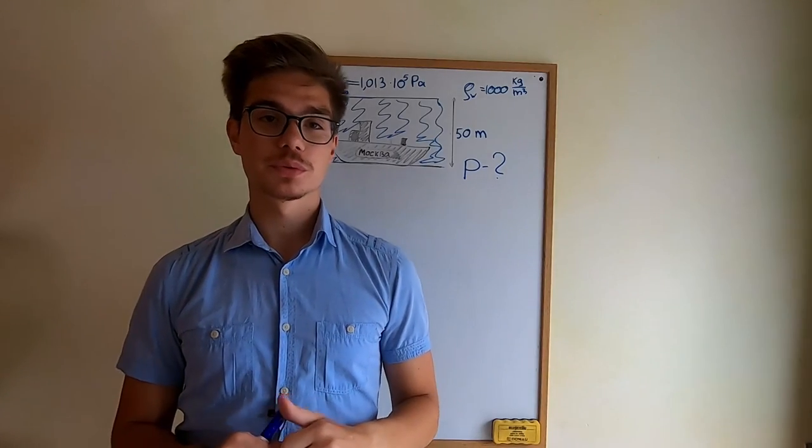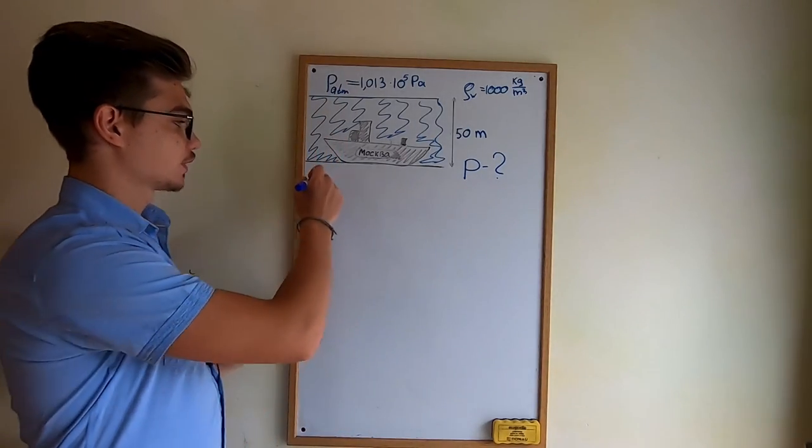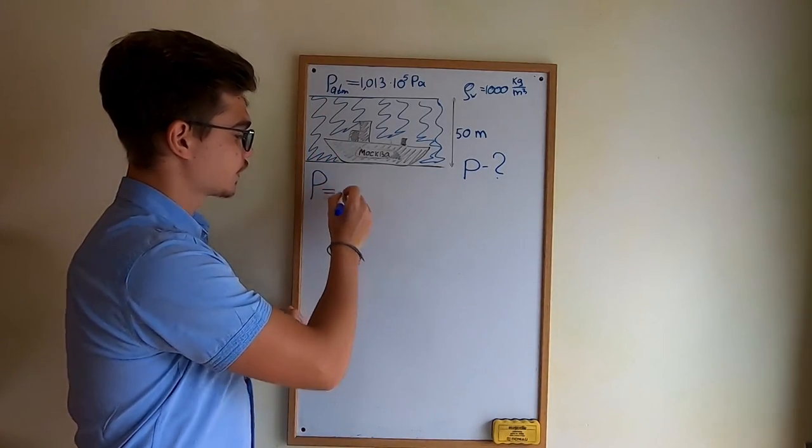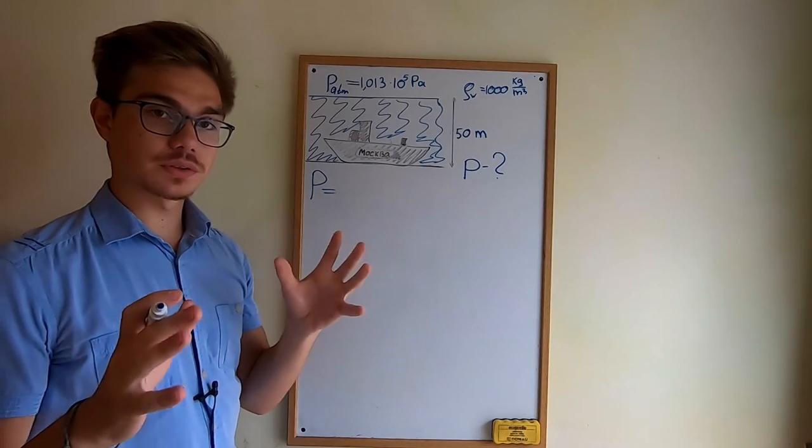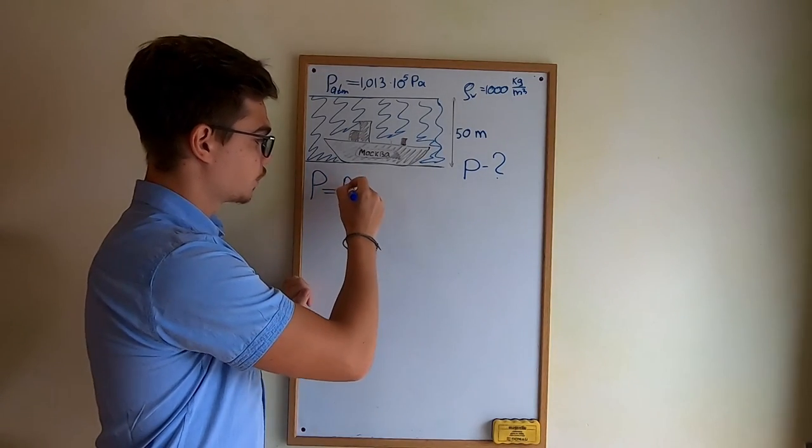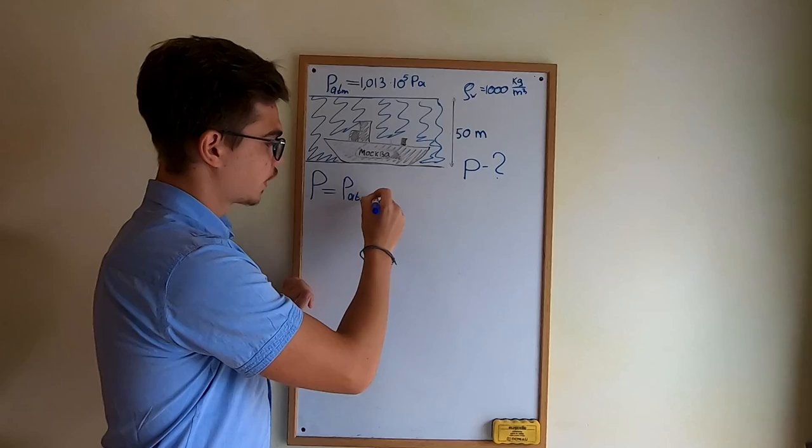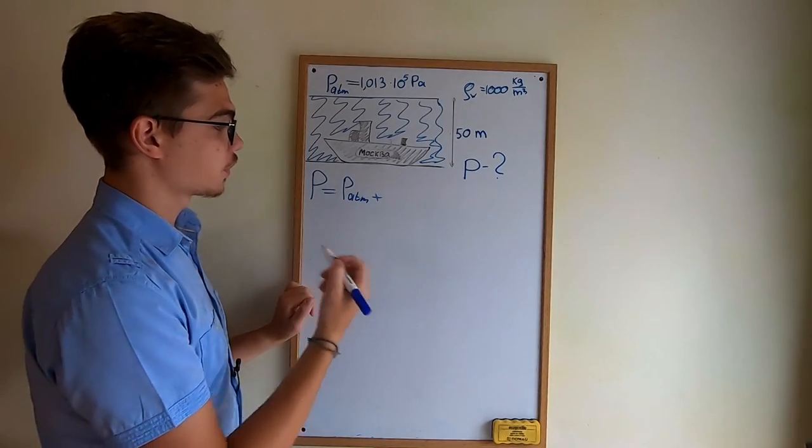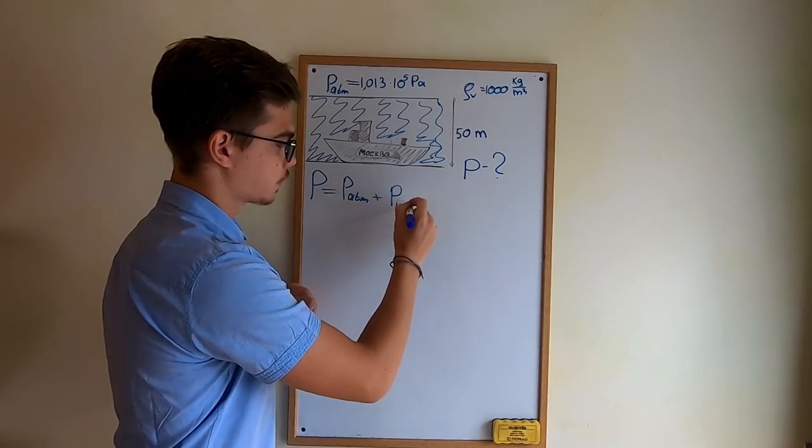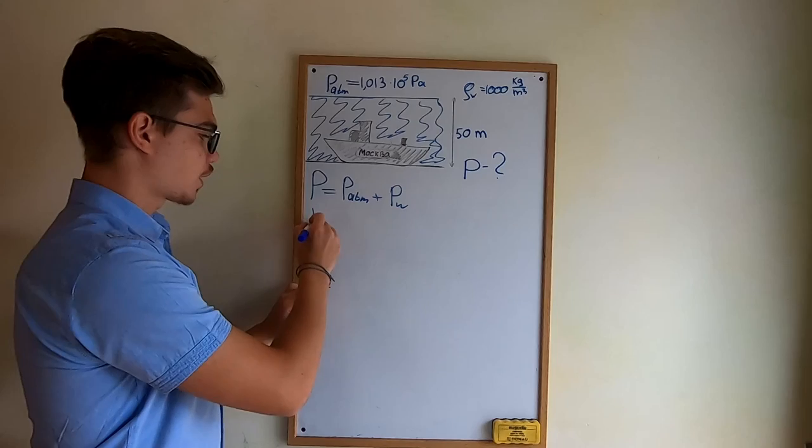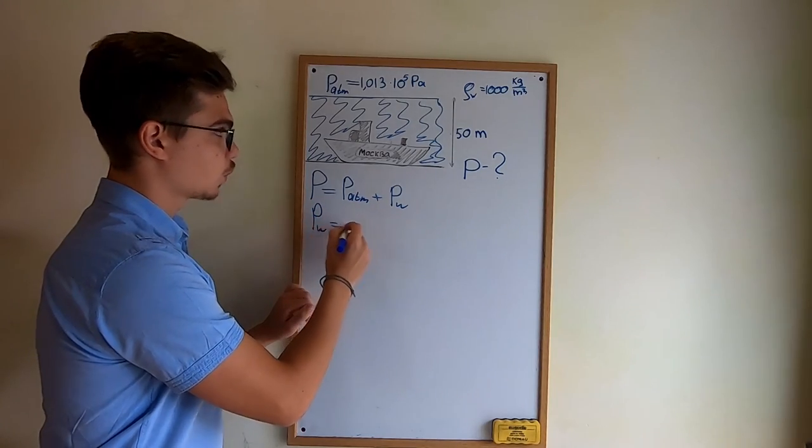Now that is pretty simple but nevertheless let's calculate it. The pressure that is acting on the ship consists of two pressures: the atmospheric one which we know, and the pressure of the water which we want to find. Now how could we find the pressure of the water knowing what we have?